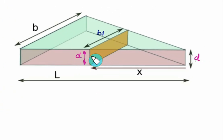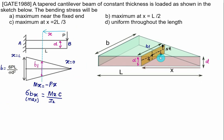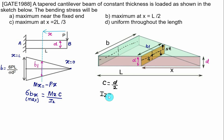We can locate the neutral axis — the section has two axes of symmetry, so the centroid is at the center and the neutral axis passes through it. The top fiber and bottom fiber are each at distance c = d/2 from the neutral axis. This value of c = d/2 is the same everywhere since depth d is constant. At any section, Iz = b1·d³/12.